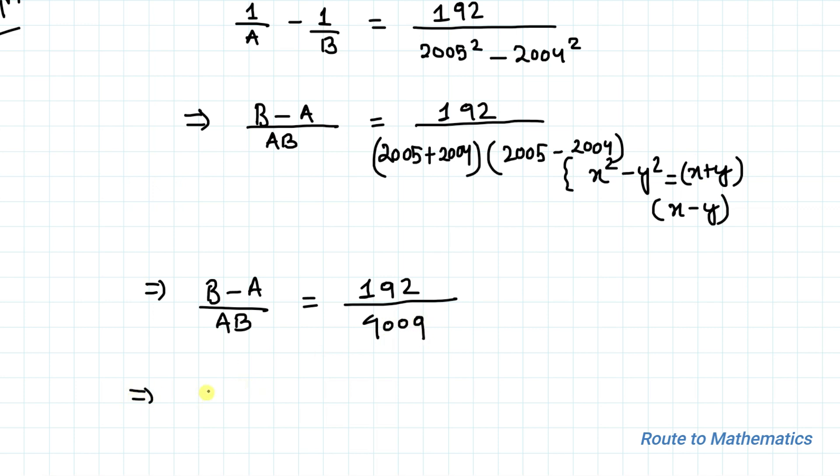In the next step, let's do cross multiplication. We have 4009(B - A) = 192 × A × B.